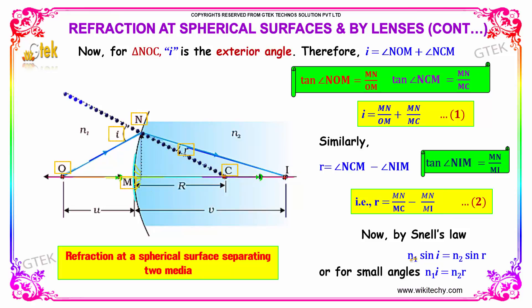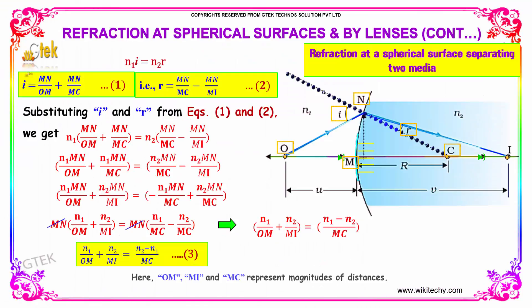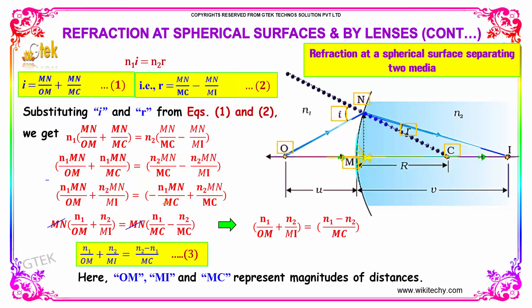By Snell's law, N1 sine I equals N2 sine R. And if it is a really small angle, we replace sine I with I and sine R with R, giving N1 I equals N2 R. Substituting the values of I and R, we get N1 into the expression for I and N2 into the expression for R. N1 is multiplied individually and the common value MN is taken out, then the minus term is arranged accordingly.